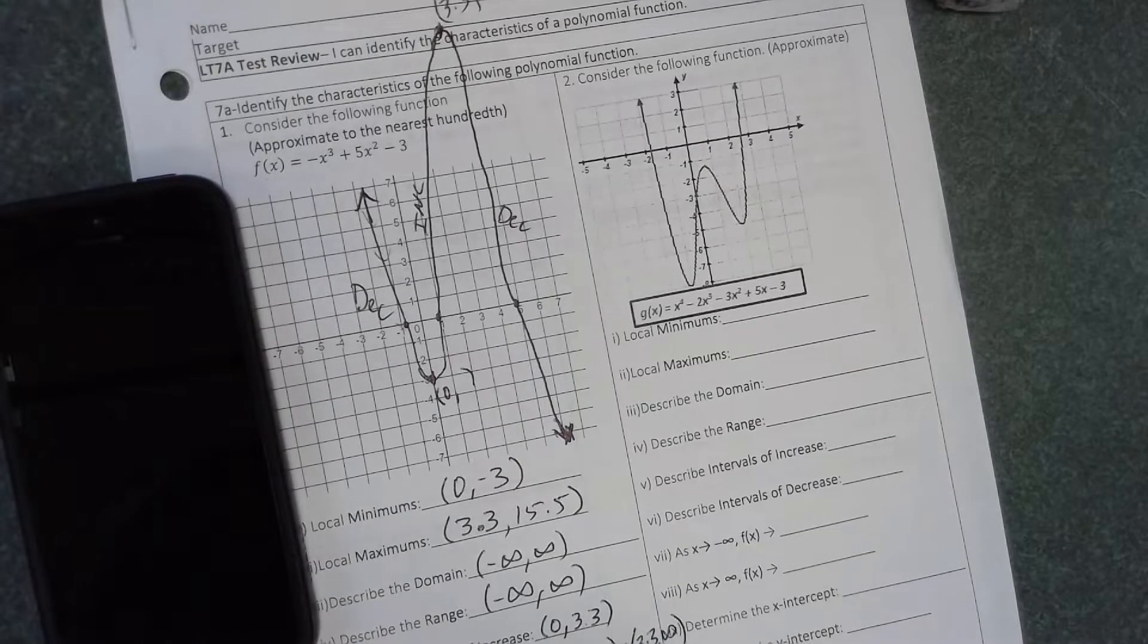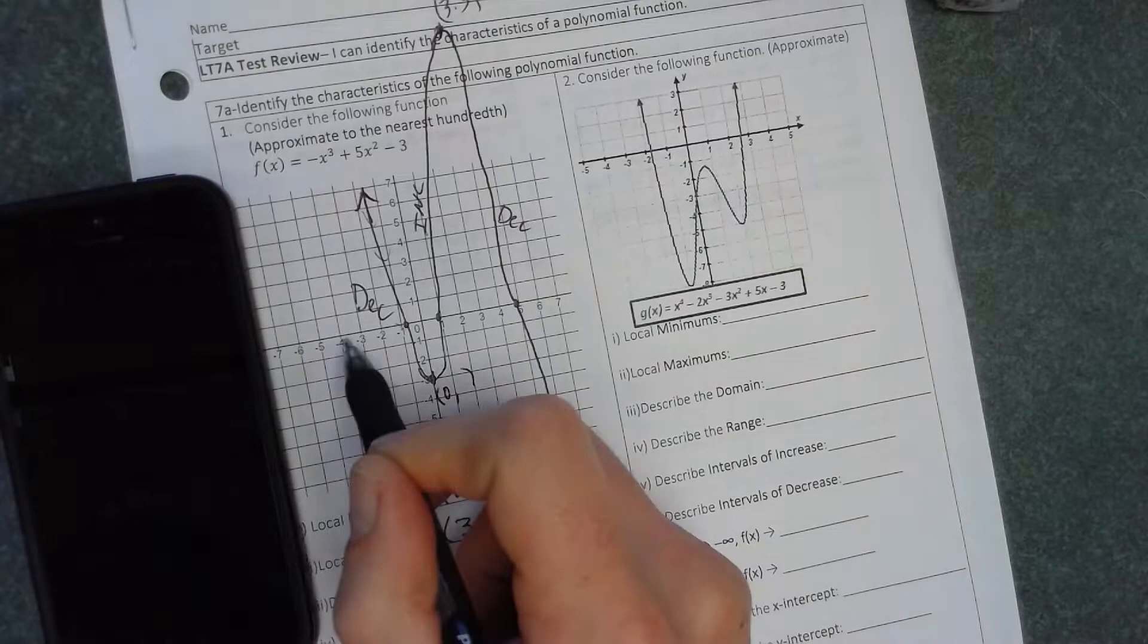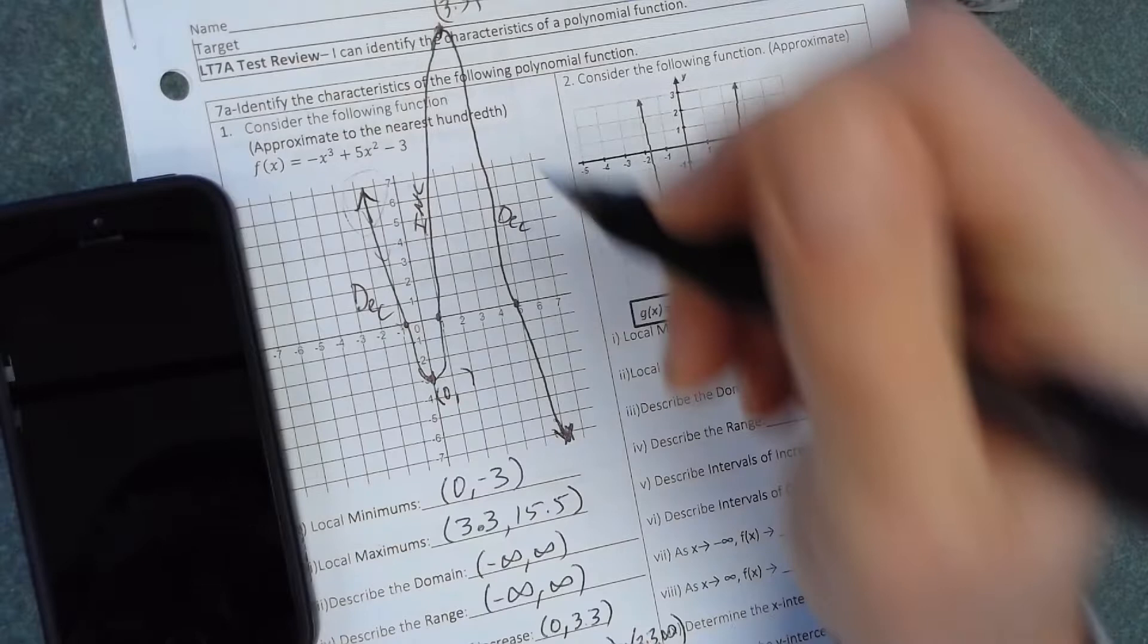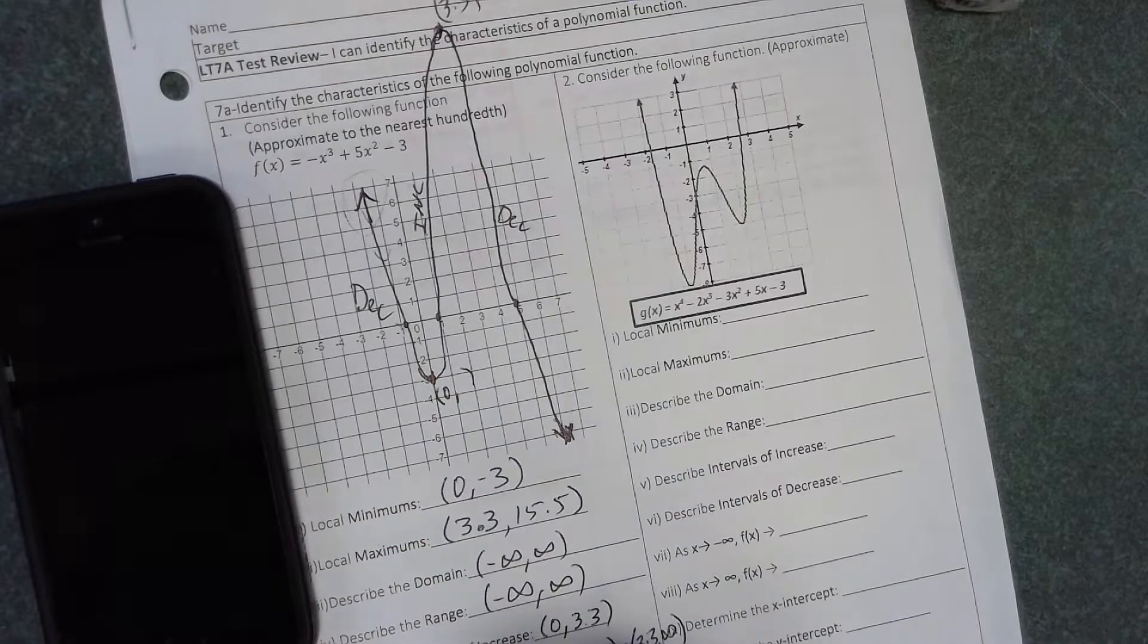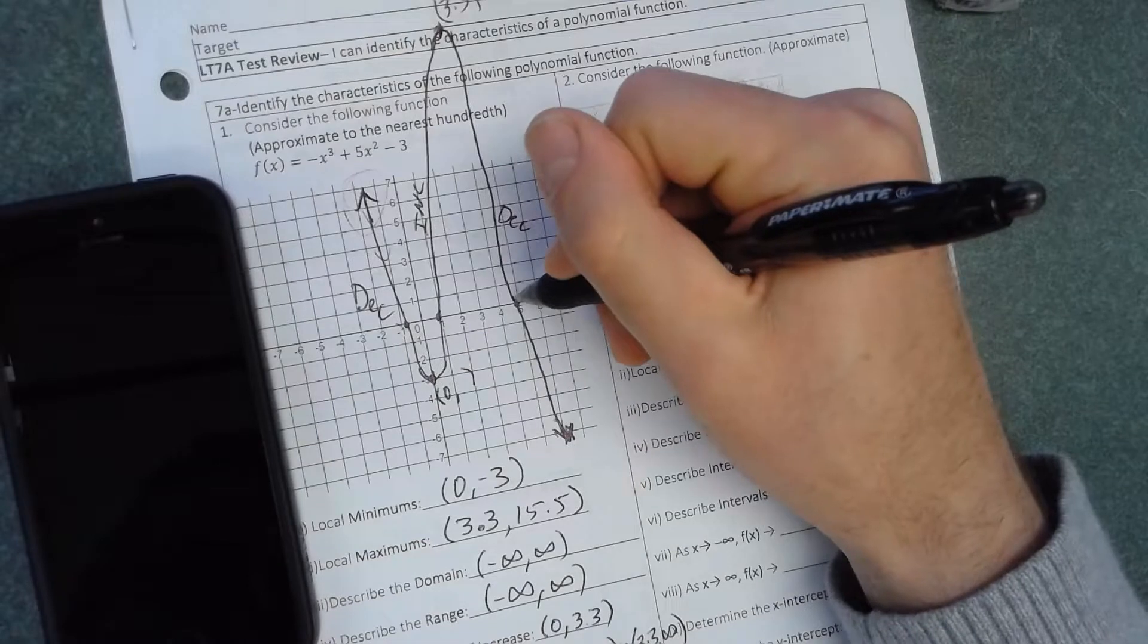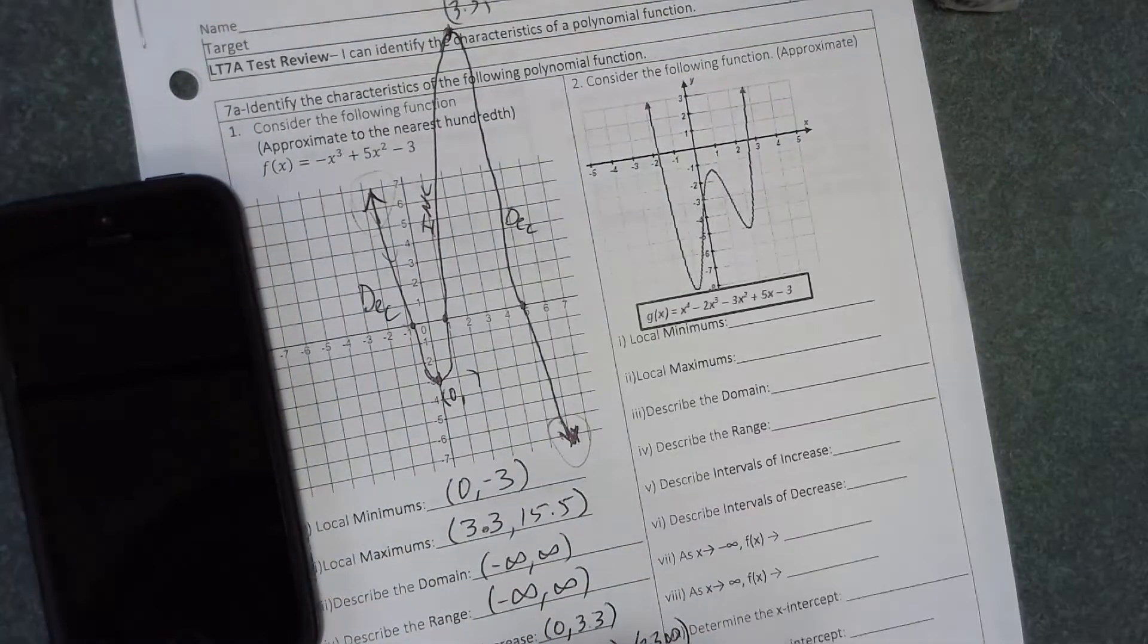Looking at the end behavior, as x goes to negative infinity, that's the left side of the graph where x's are going negative. On the left side of the graph, what's happening? It's going up to positive infinity. As x goes to positive infinity, that's the right side of the graph. Where's the end here? It is on the right side, and where's that going? That's going down to negative infinity.